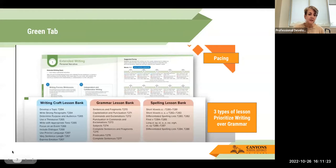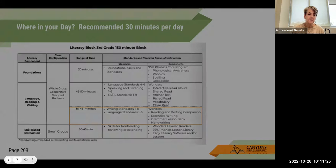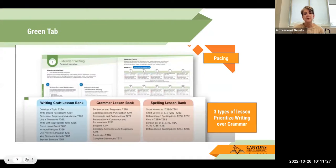So when you turn to the green tab, you will see a couple of pieces. You'll first see that there are actually two writing prompts or two pieces. So inside of that, you will see that there's a writing craft lesson bank, the grammar lesson bank, and the spelling lesson. There are three types of these and we want you to prioritize writing over grammar and we're going to go over that in a little bit.